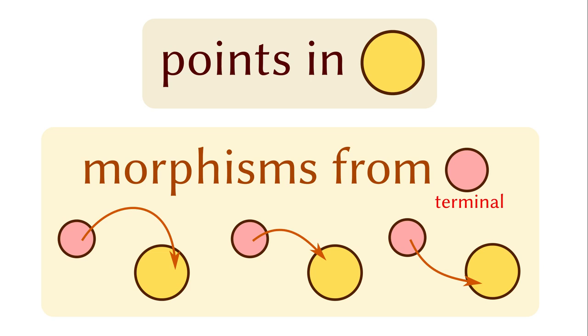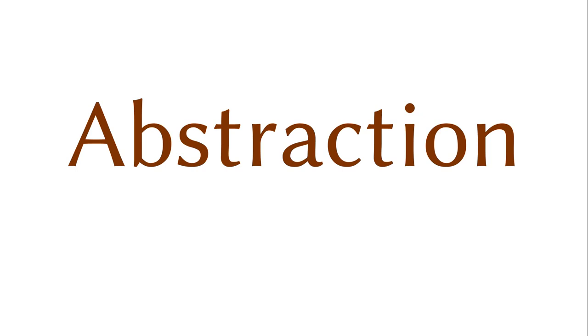For example, you can talk about the points in a graph or a group. The objects can be set or anything else. The idea of keeping things abstract should sound familiar. We have been using abstraction to hide implementation details in computer programming. Category theory is a mathematician's way to do abstraction.